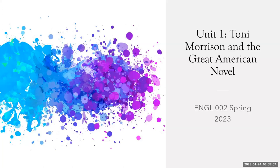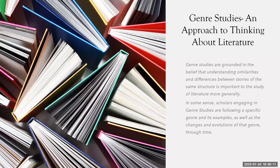Let's get started with the background information. What we're doing in this first unit, unit one of this semester, is approaching literature from a style called genre studies. Genre studies is just one of the ways that we get to think about studying literature. Genre studies are grounded in the belief that understanding similarities and differences between stories of the same structure is important to the study of literature more generally.